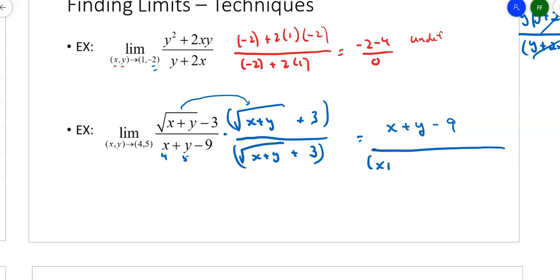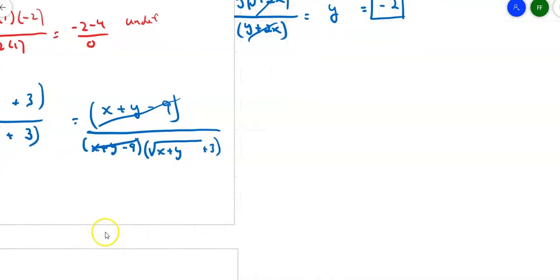On the bottom, you're going to get (x plus y minus 9) times that square root of (x plus y) plus 3. But notice what happens—this whole thing in the numerator is one chunk and cancels that entire chunk in the denominator. That gives me 1 over square root of (x plus y) plus 3. Now I can put the values in. The values were 4 and 5, so that gives me square root of 9, which is 3. So 1 over (3 plus 3), that limit is 1/6.